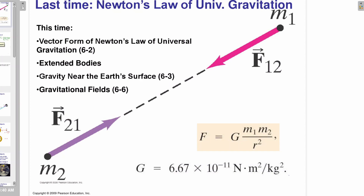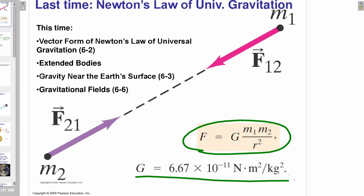Hey everyone, let's continue talking about Newton's law of universal gravitation. Last time we talked about the magnitude of the force, which is dependent on the product of the masses divided by their distance squared. That constant of proportionality is Newton's gravitational constant. We talked about how gravity is universal, meaning that all masses attract every other mass. So if M1 is pulling on M2 in this direction, then M2 is pulling on M1 in this direction. And that's true for any two objects that have mass.